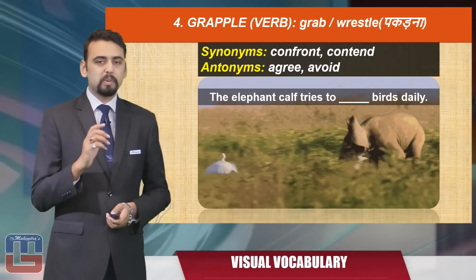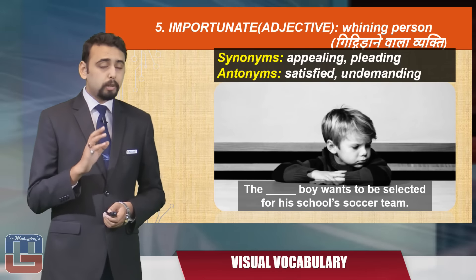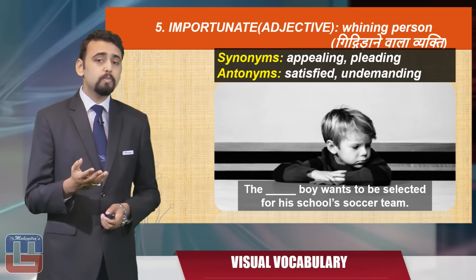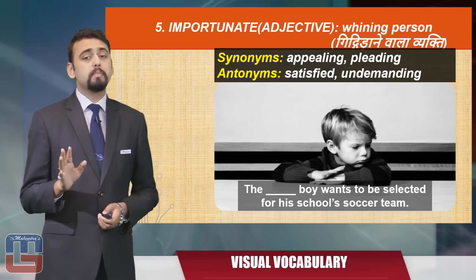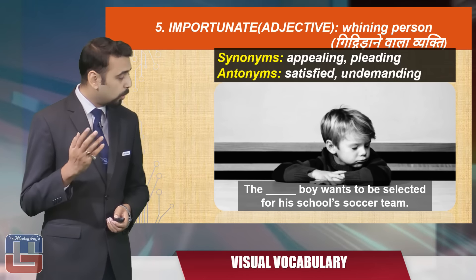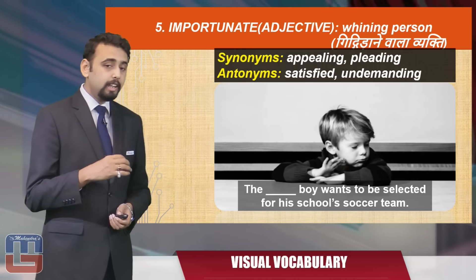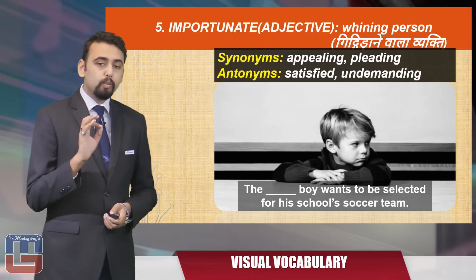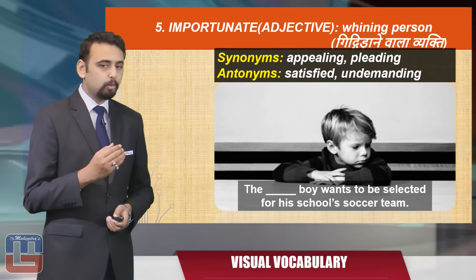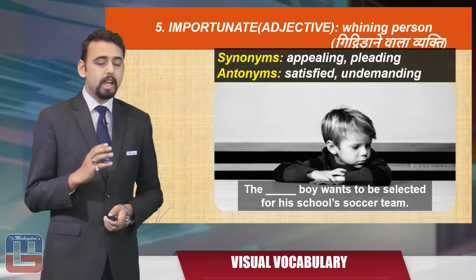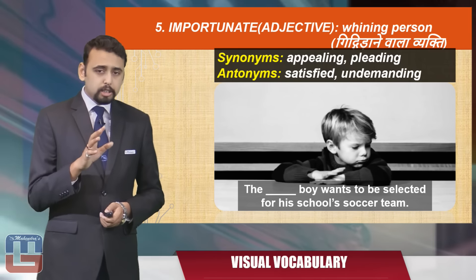The next word is 'importunate,' an adjective meaning a whining person. The synonyms are 'appealing' or 'pleading,' and the antonyms are 'satisfied' or 'undemanding.' Here's an image of a boy who is whining about wanting to be selected for his school's soccer team. The sentence becomes: 'The importunate boy wants to be selected for his school's soccer team.'